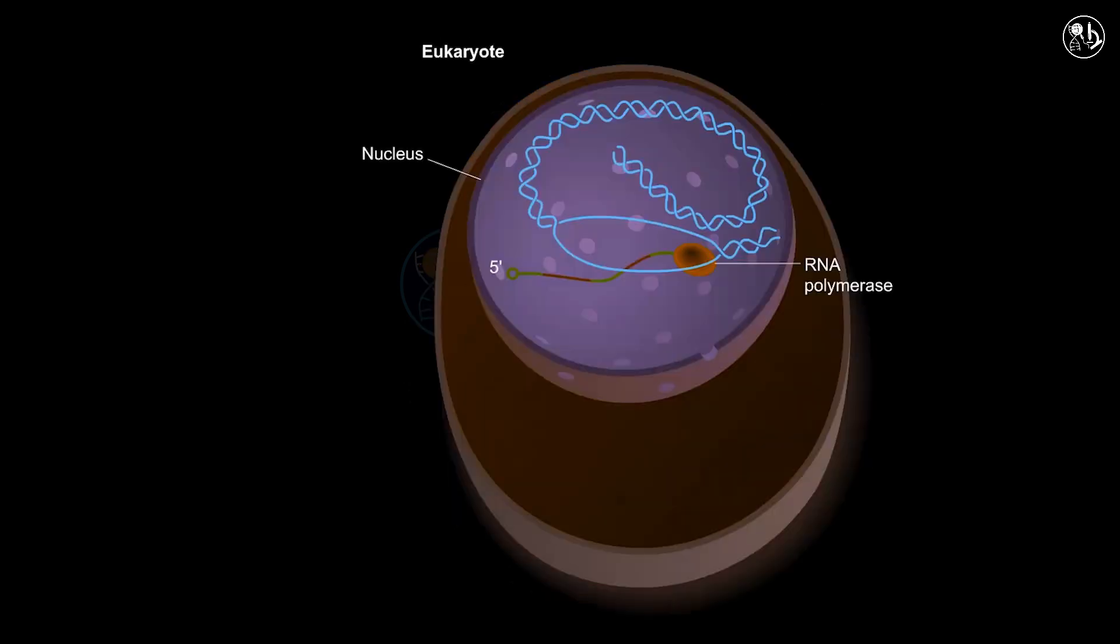In eukaryotes, there is a nucleus, so transcription and translation are separated. The initial RNA transcript is called the pre-mRNA, which needs to be processed in the nucleus before it becomes the mature mRNA.